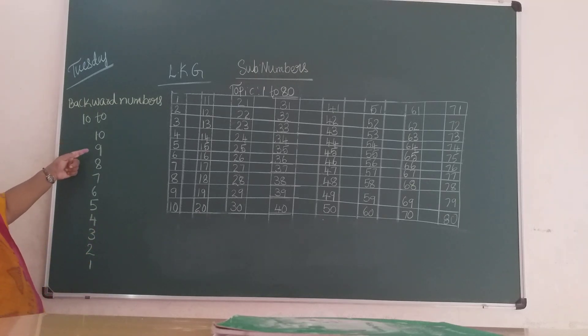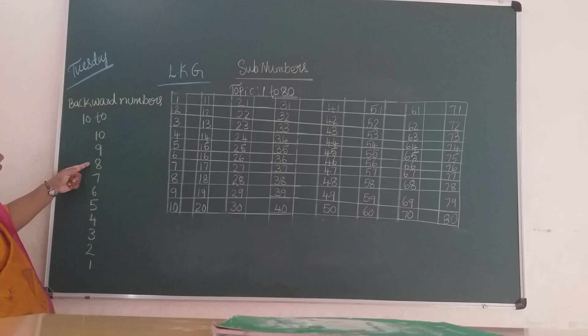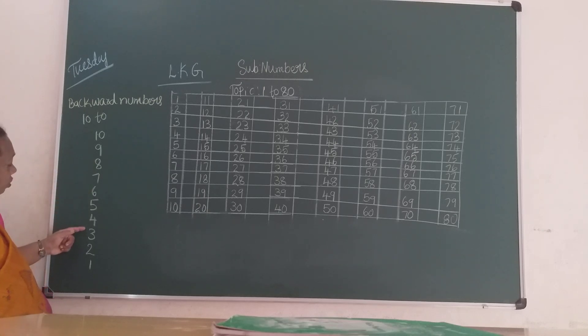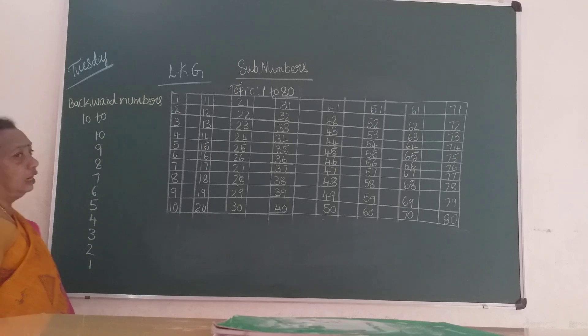10, 9, 8, 7, 6, 5, 4, 3, 2, 1. Okay, children.